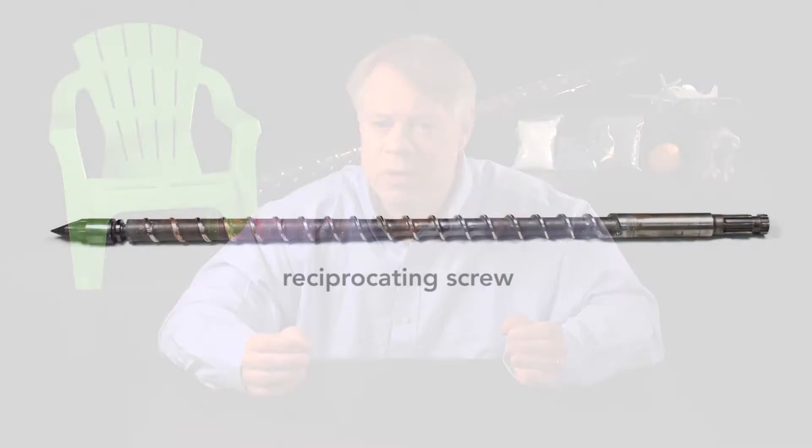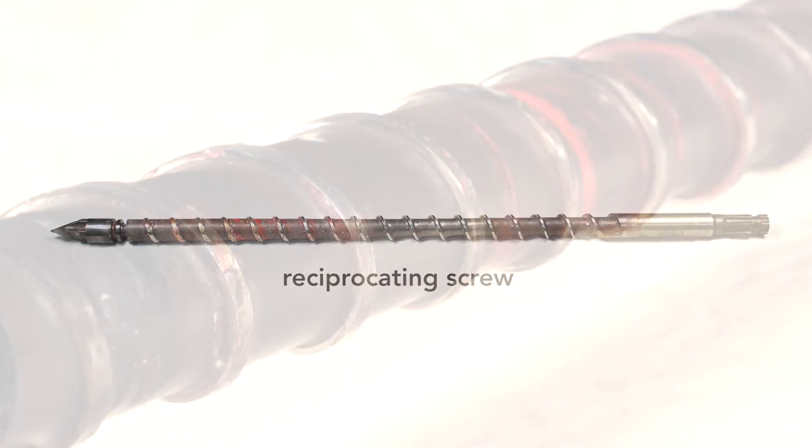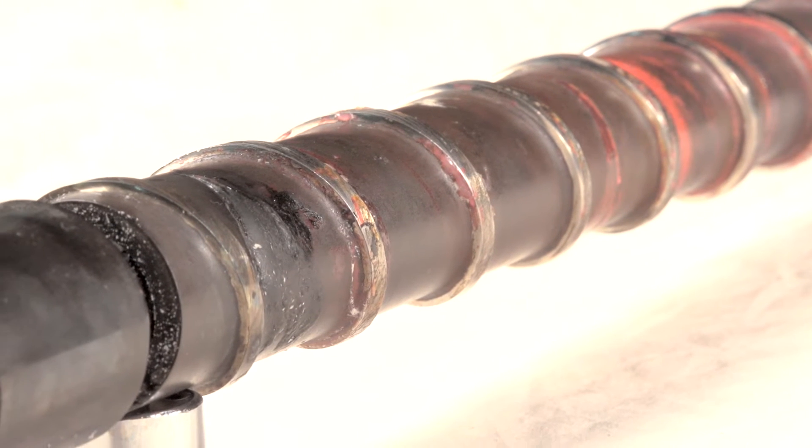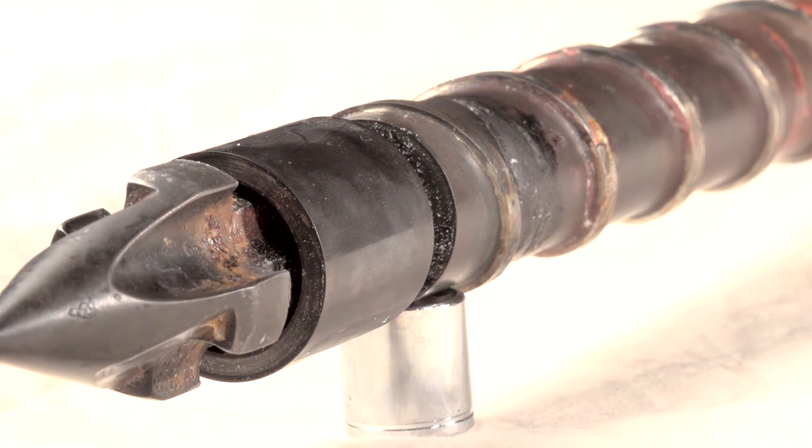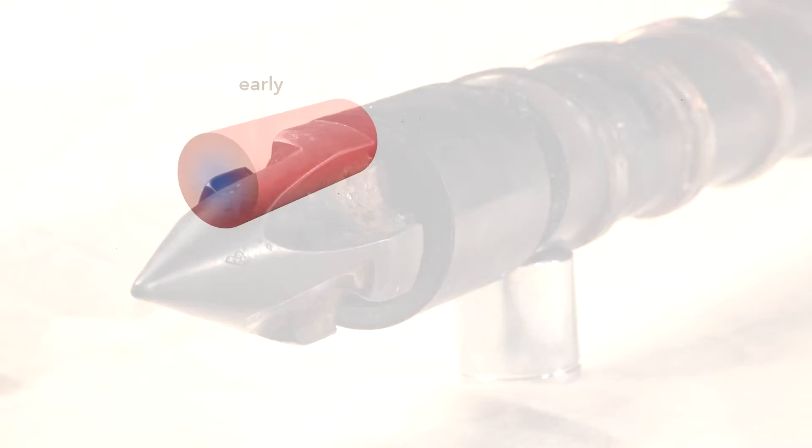The solution was the reciprocating screw, often regarded as the most important contribution that revolutionized the plastics industry in the 20th century. In the earlier plunger-style machines, plastic filled completely the cylindrical barrel, but the plastic was not at a uniform temperature. The reciprocating screw overcomes this in three ways.